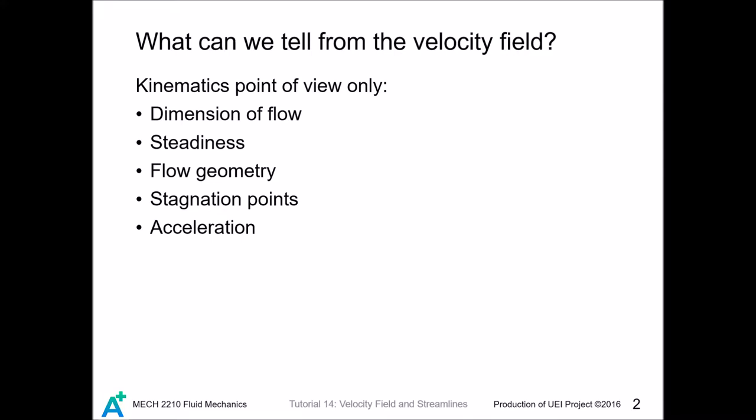Velocity field is really important in the flow - it can completely describe a flow. The dimension and the steadiness are really the basic information it can tell. In fluid mechanics we have to model both the time and space, so for a general flow we have four independent variables: this is the time variable and these three are the space variables.